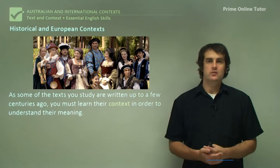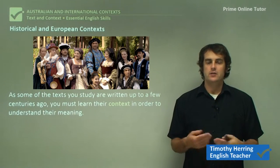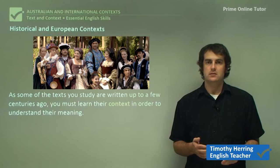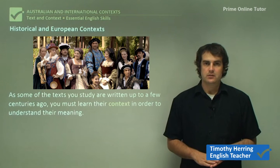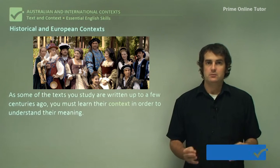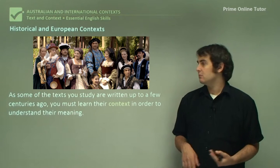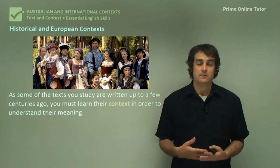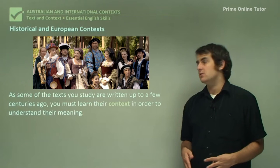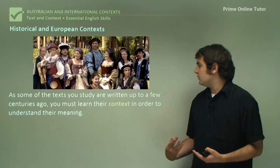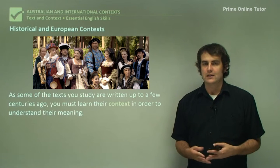Hello and welcome. We're going to be looking at historical and European context for texts and literature. The reason why we're looking at these texts is because a lot of texts that you will be reading from these contexts have been written centuries ago, and so you must learn their context in order to understand what they're actually referring to.